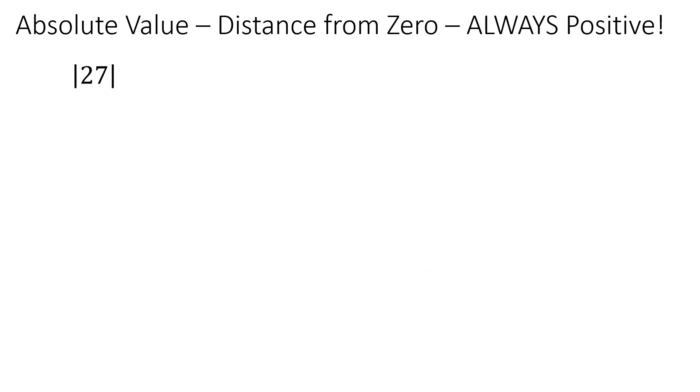Absolute value can be considered as the distance from zero on a number line. Distance is always measured as a positive value. When you're traveling, you can never travel a negative distance — you're always traveling a positive distance. The odometer in your car never goes backwards; it's always moving forwards, even if you put it in reverse.